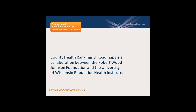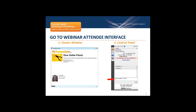As many of you know, the County Health Rankings and Roadmaps Program is a collaboration between the Robert Wood Johnson Foundation and the University of Wisconsin Population Health Institute. For those who may be new to our webinars, we want to orient you to the technology. The GoToWebinar interface has two parts: on the left is the viewer window where you see our screen, and on the right is the control panel. You can interact with us by submitting your questions via the control panel, and we'll make sure to leave time for your questions.